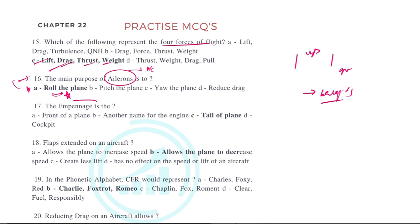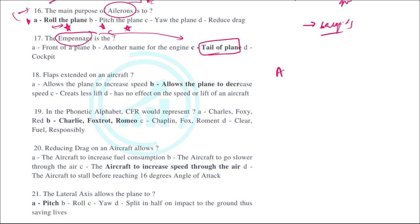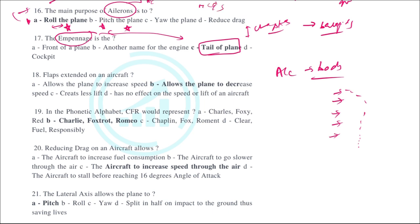The empennage is the tail of the plane. The aircraft body consists of many parts; knowing the important components is sufficient. These topics were added in the MCQs so that students remember key components that may appear in exams. Empennage is the tail of the plane.